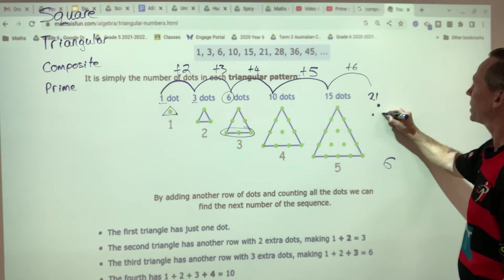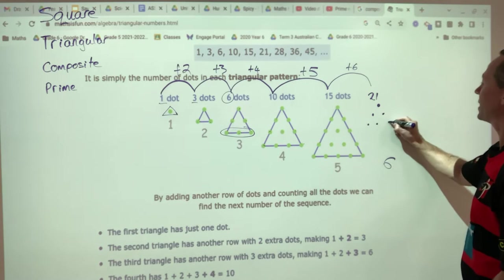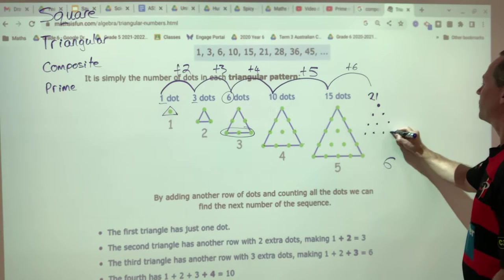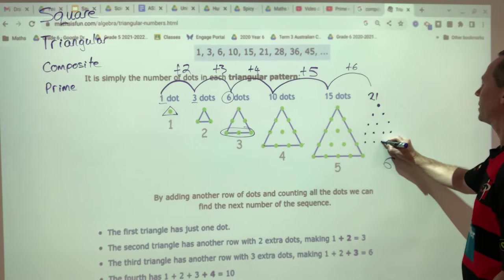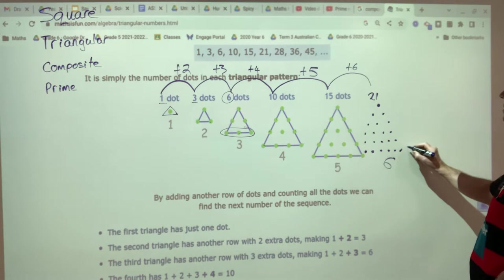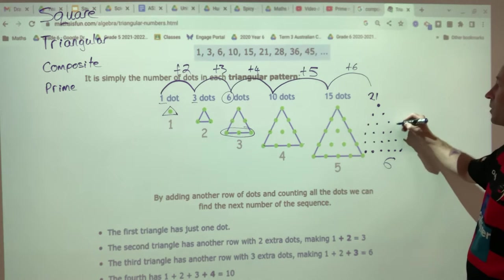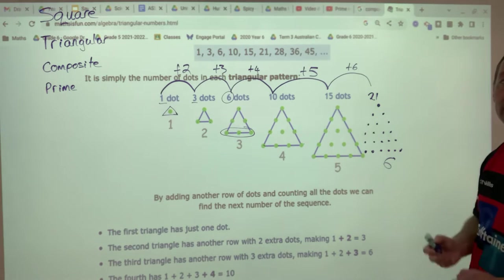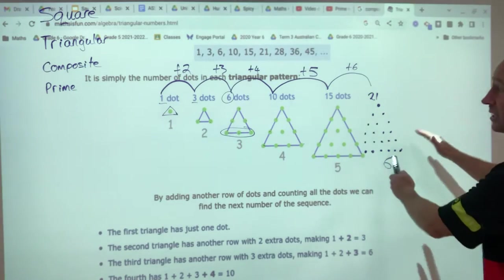Twenty-one. So I have one here, and I've got two underneath, three underneath, four underneath, five, and then one, two, three, four, five, six. Six plus five plus four plus three plus two plus one equals twenty-one. And so on. You can see a pattern.